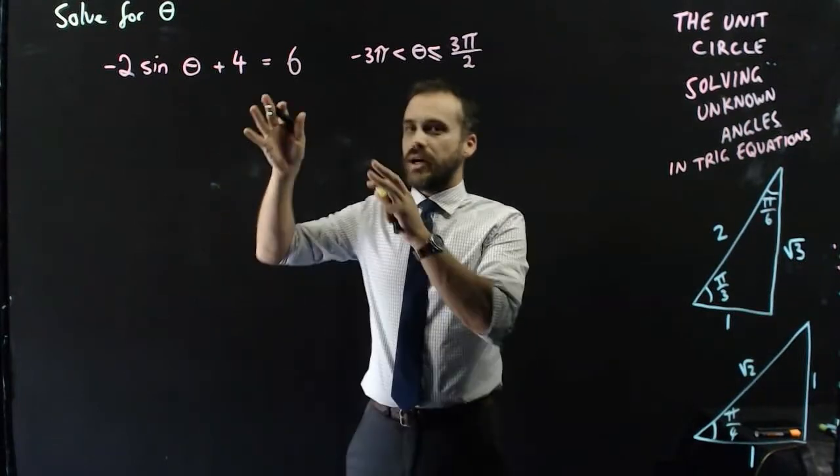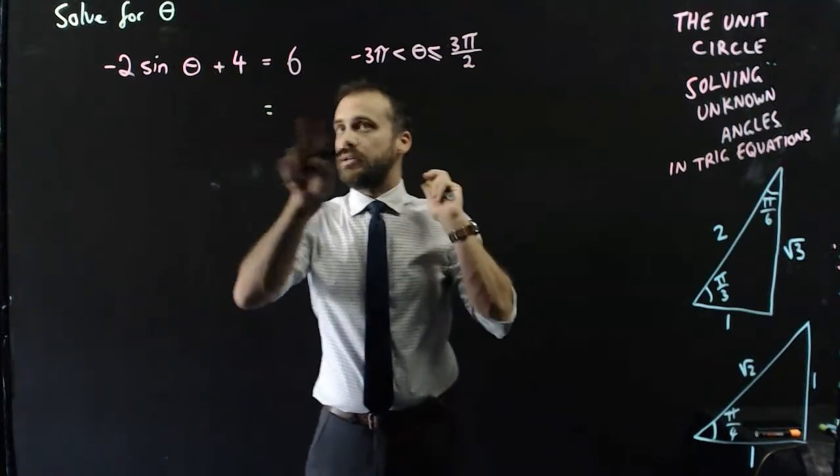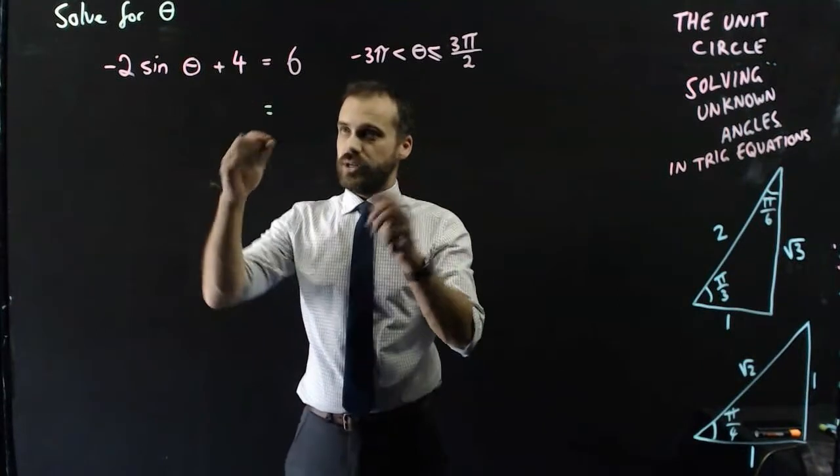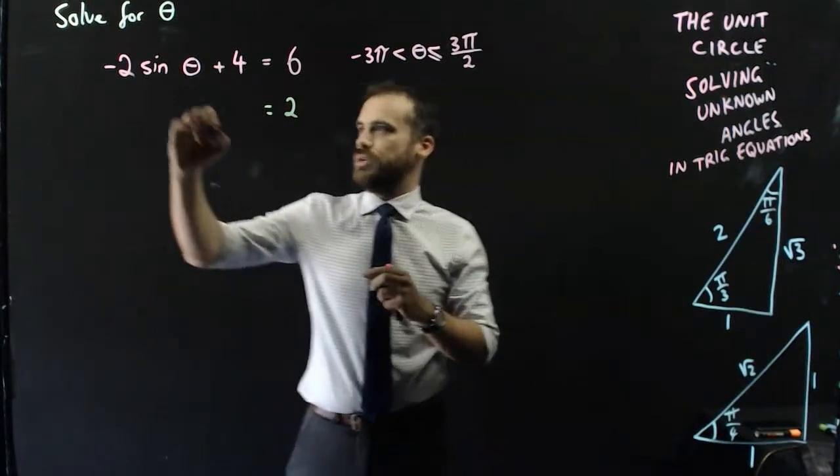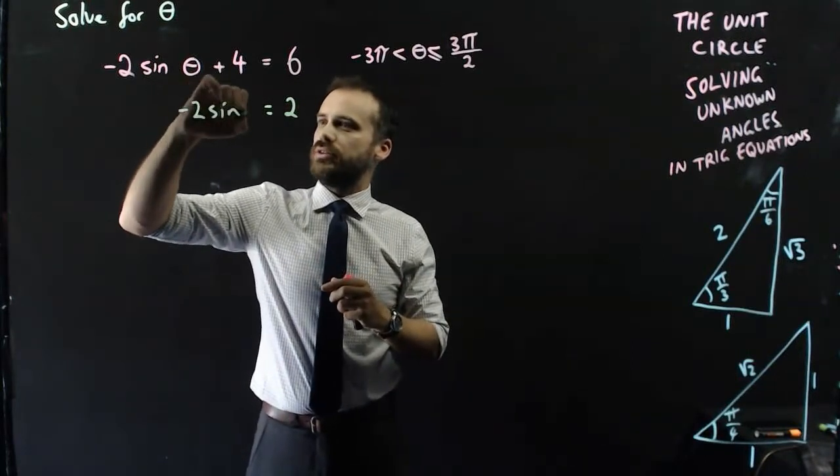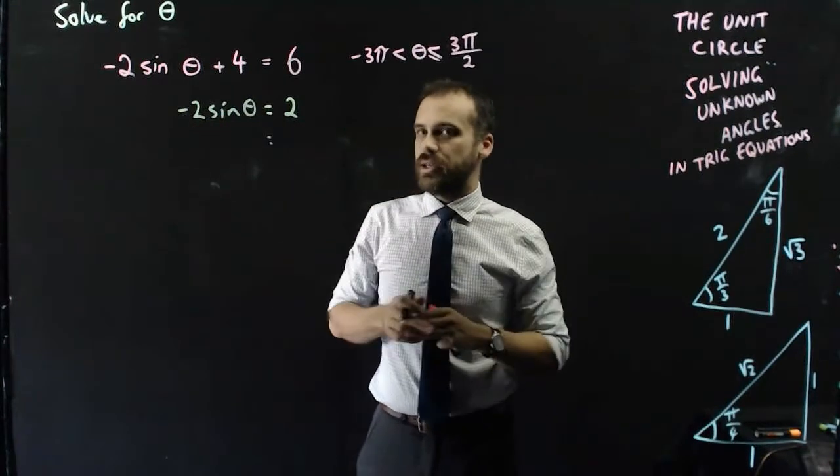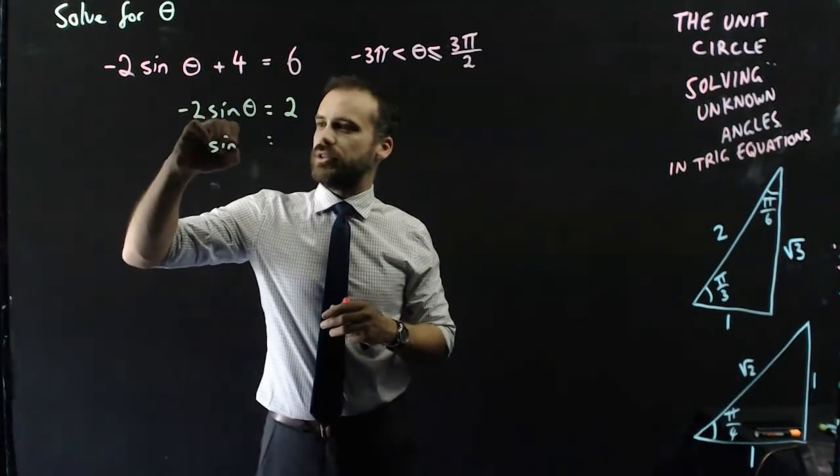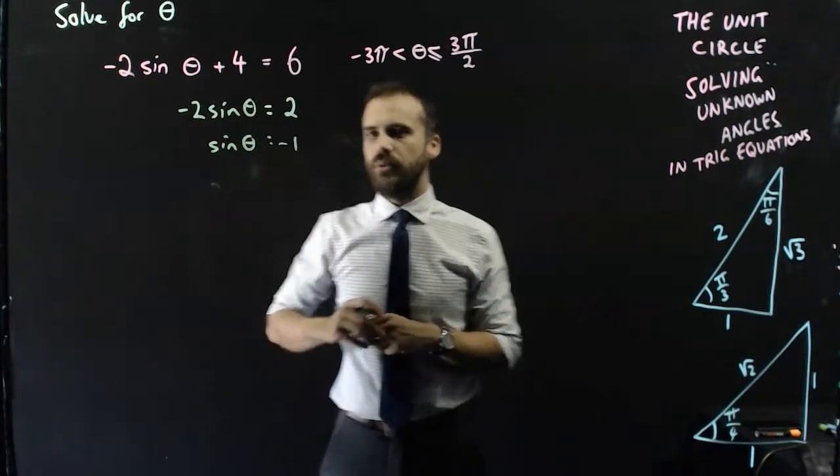We're going to solve this and simplify as much as we can. I'm going to subtract 4 from both sides. That's going to be 6 minus 4 is 2, so now you have negative 2 sine theta equals 2. Now I can divide by that negative 2, and I can say that sine theta equals 2 divided by negative 2 is negative 1.